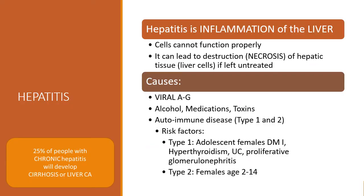Hepatitis is a widespread inflammation of the liver cells that impacts children and adults. This inflammation results in impaired liver function and therefore a buildup of toxins, the inability to produce adequate proteins like albumin and clotting factors, the inability to store blood, fat-soluble vitamins, and glycogen. Inflammation around the bile channels can cause obstructive jaundice.